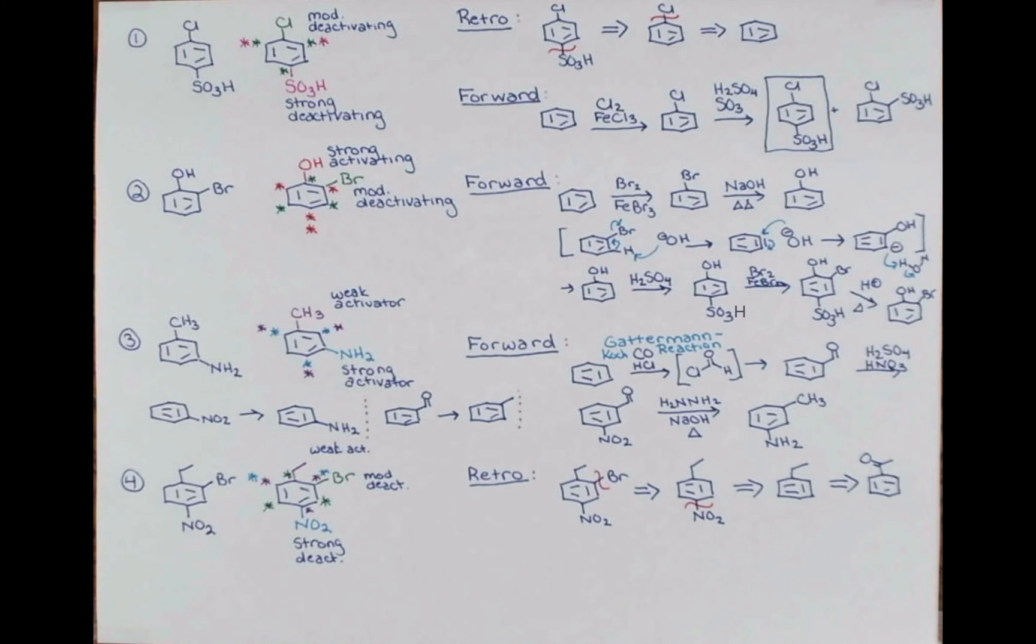Okay, let's take a look at our forward synthesis. Beginning with benzene, we can treat this with an acid chloride in the presence of aluminum trichloride. Now we need to reduce this to get to the ethyl compound so we get the correct directing effect. We used the Wolf-Kishner last time. Let's use the Clemonson reduction this time. Now we can nitrate our compound as we did in the previous example. And finally, we can brominate this.